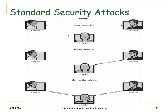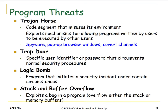Here are pictorial views of how different attacks occur. In normal communication, sender and receiver communicate and the attacker is outside. In a man-in-the-middle attack, the attacker inserts themselves into the communication stream — the receiver thinks it's talking to the sender, and the sender thinks it's talking to the receiver — allowing the attacker to change or gather information at will.